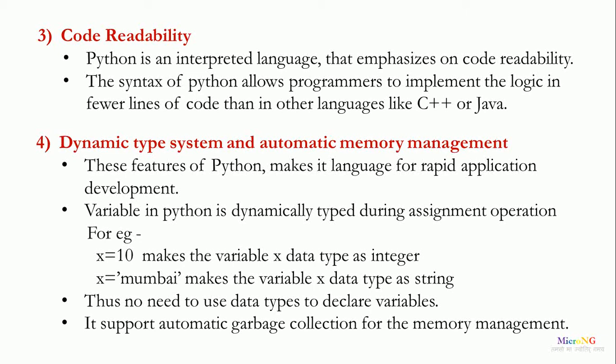For example, when we write a statement x equal to 10, it makes the variable x data type as integer. When we write x equal to Mumbai, it makes the variable x data type as string. There's no need to use the data types to declare the variables in Python. It also support automatic garbage collection for the memory management.